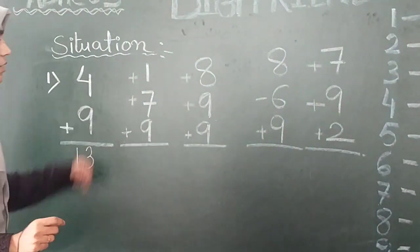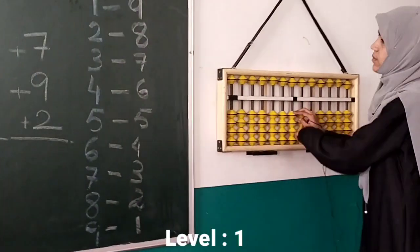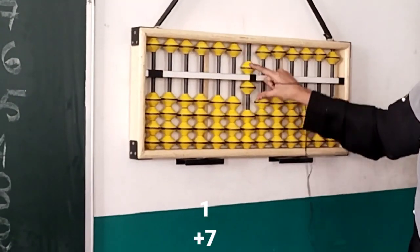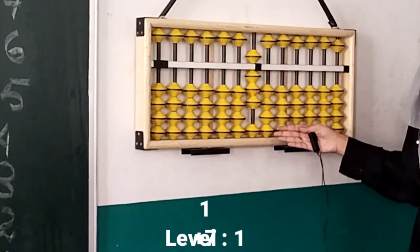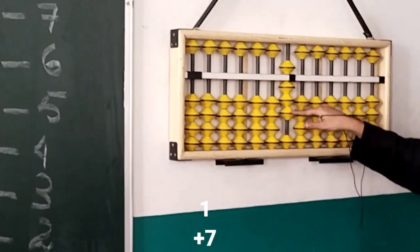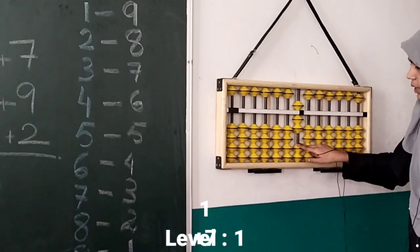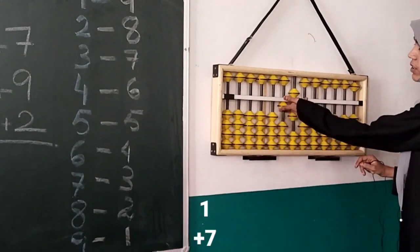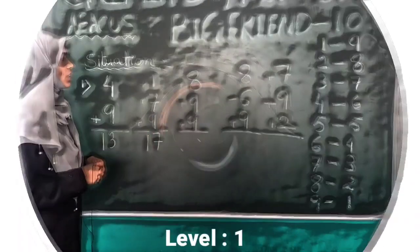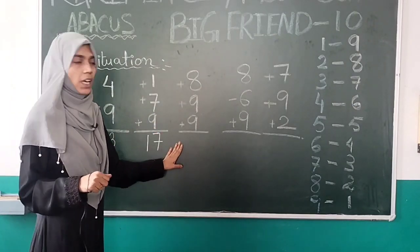Our second situation is one plus seven plus nine. Number one we do with thumb, seven with pinch. Again we don't have enough beads for nine, so we take help of Big Friend. Big Friend helps only on condition that nine cuts friendship with its best friend. Our answer is seventeen. Our third situation is eight plus nine plus nine.